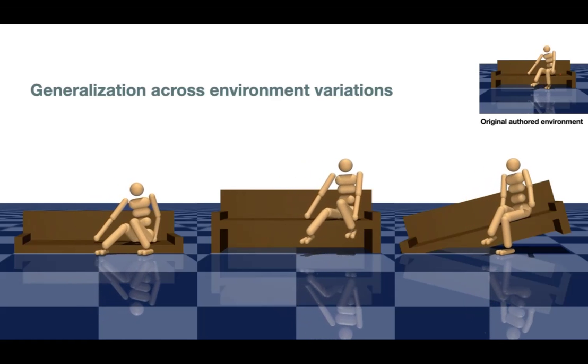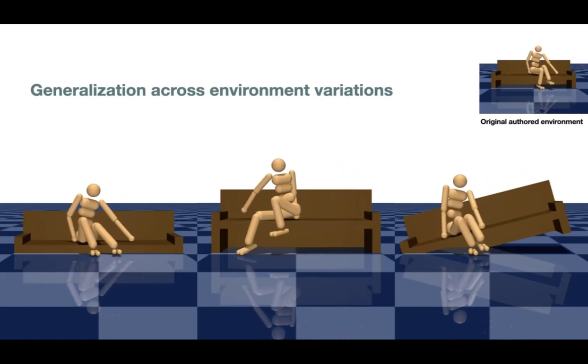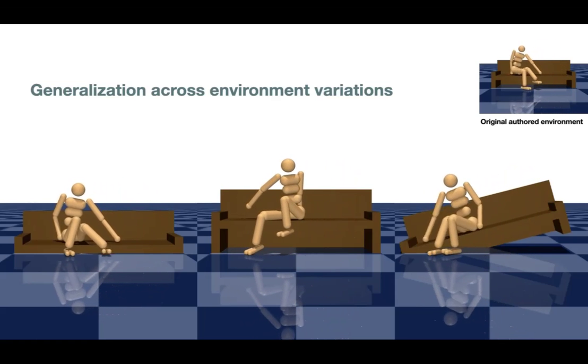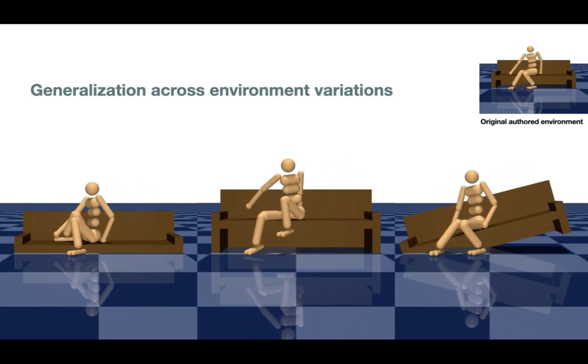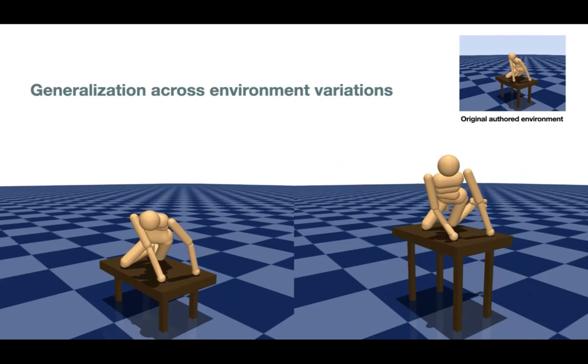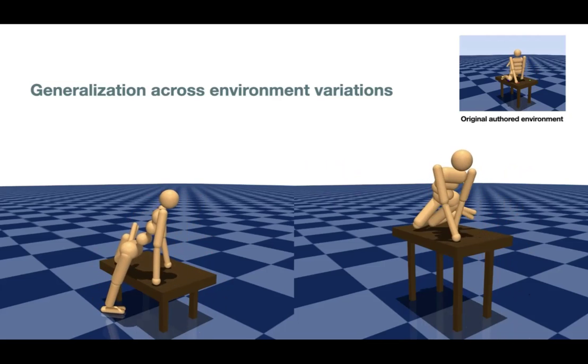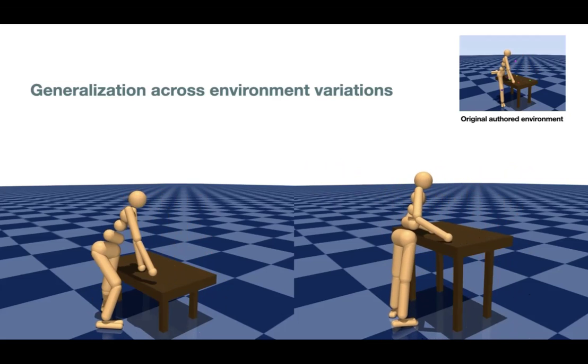Given a particular task and its sequence of keyframes, our method trivially generalizes to changes in heights or angles, and often results in different strategies. Given the same set of keyframes from a regular height table, the character shows different motions when climbing over a short table and a tall table, exhibiting differences in timing and body positioning.